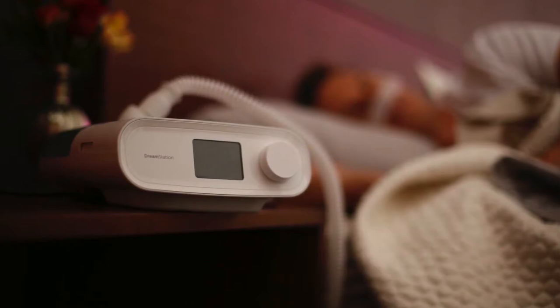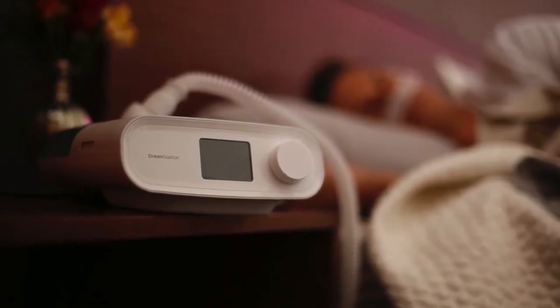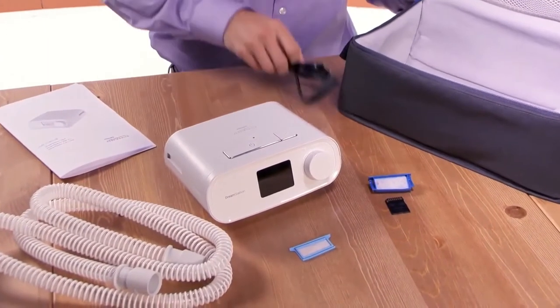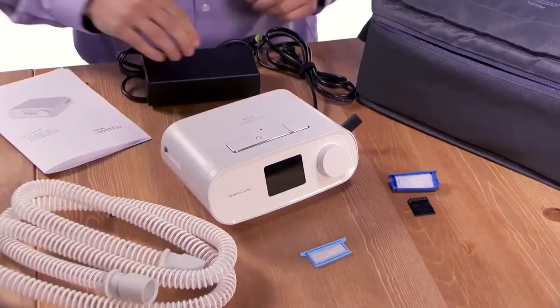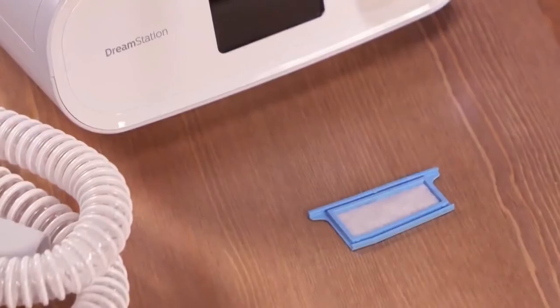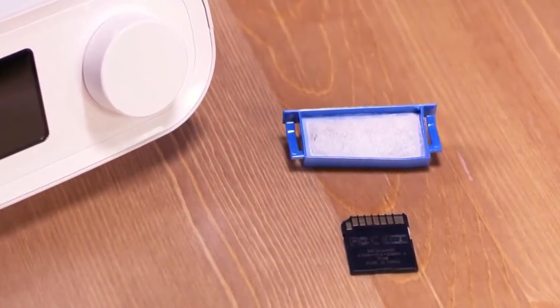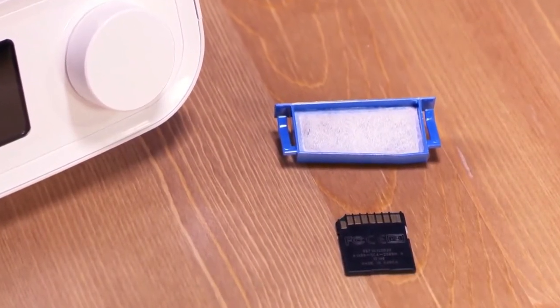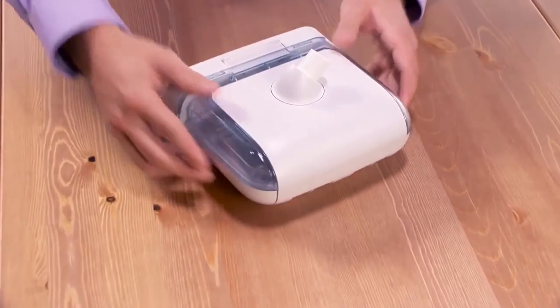DreamStation is a positive airway pressure therapy device designed for the treatment of obstructive sleep apnea. DreamStation devices come with a carrying case, power cord, power supply, flexible tube, disposable ultrafine filter, and user manual. A reusable blue pollen filter and SD card come installed in the device. A humidifier is an optional accessory.